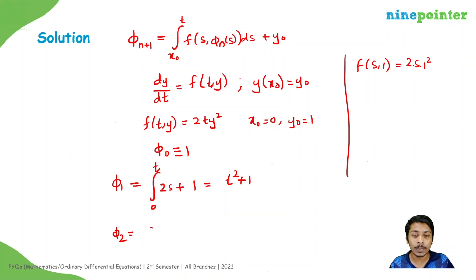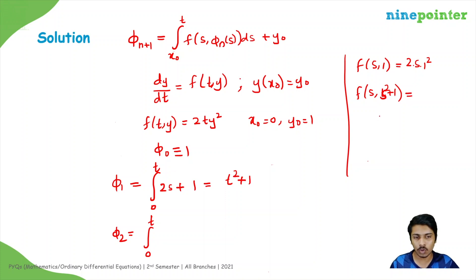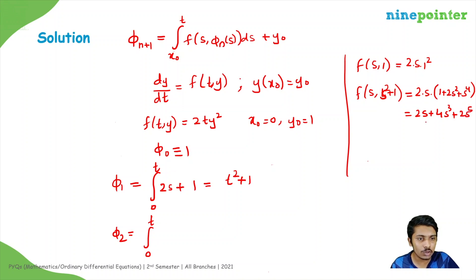Similarly, we find the second Picard iterate φ₂, which is the integral from 0 to t of f(s, φ₁(s)) ds plus 1. Here φ₁(s) = s² + 1, so we substitute f(s, s²+1) = 2s·(s²+1)². Expanding (s²+1)² gives 1 + 2s² + s⁴, so the integrand becomes 2s + 4s³ + 2s⁵.